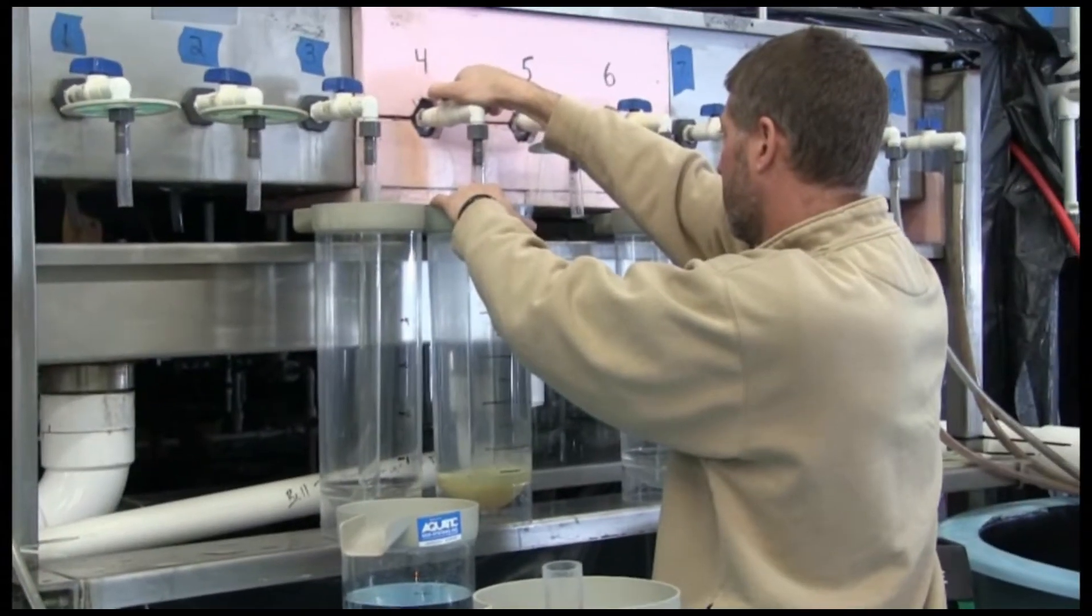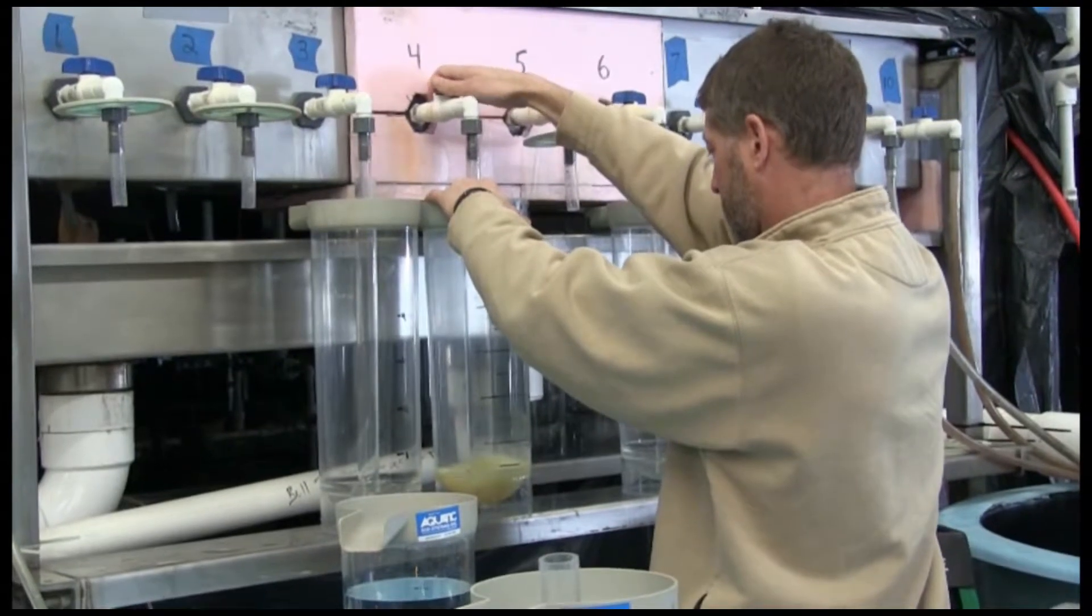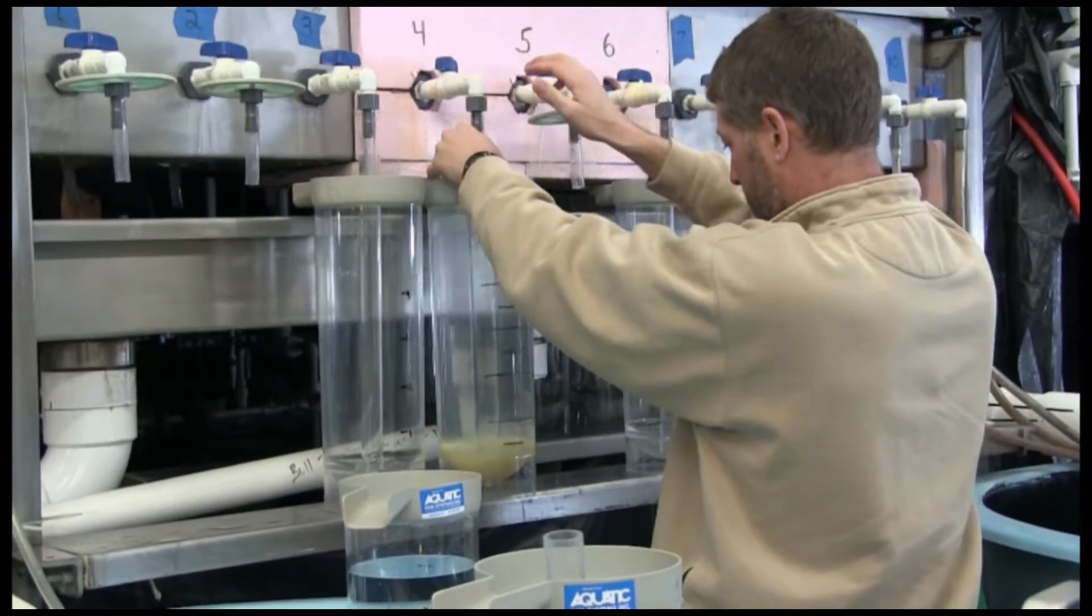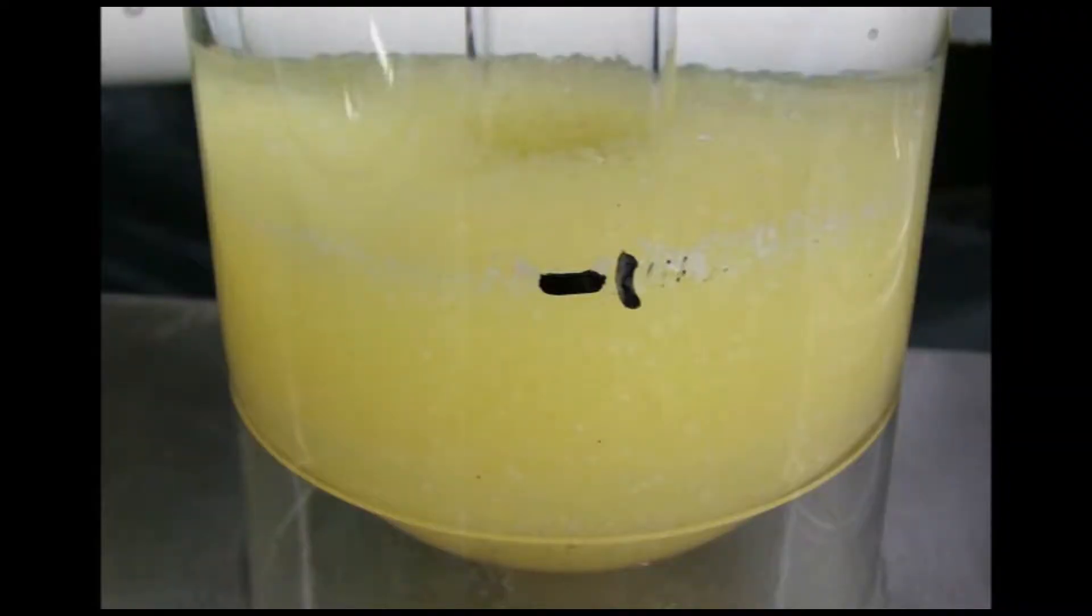The inflow is set to have good rolling movement of the eggs by adjusting the ball valve. The inflow is based on the number of eggs in the jar as well as developmental stage, generally increasing flow towards the hatching stage.